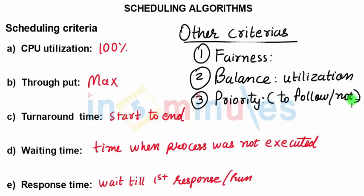So basically, if we go through, we have five major criteria and three other criteria. Together, these are the criteria on which scheduling algorithms would be chosen or rather scheduling algorithm should be selected.